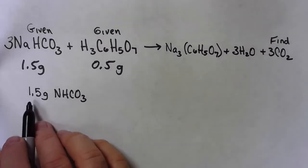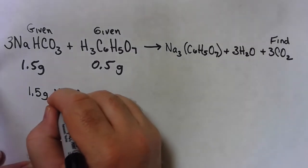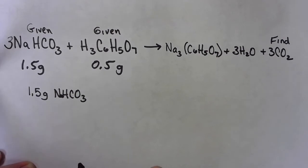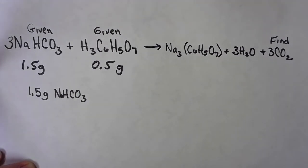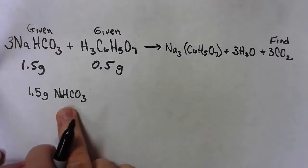We'll start with the 1.5 grams of the sodium bicarbonate, NaHCO3. The second step after the balanced equation, I have to convert this into moles.